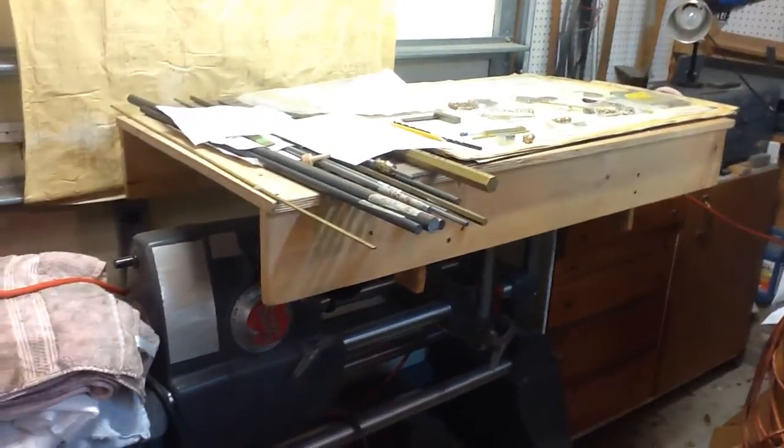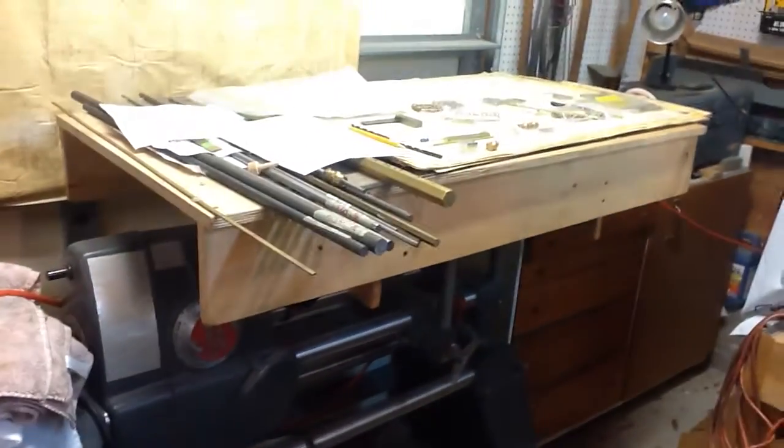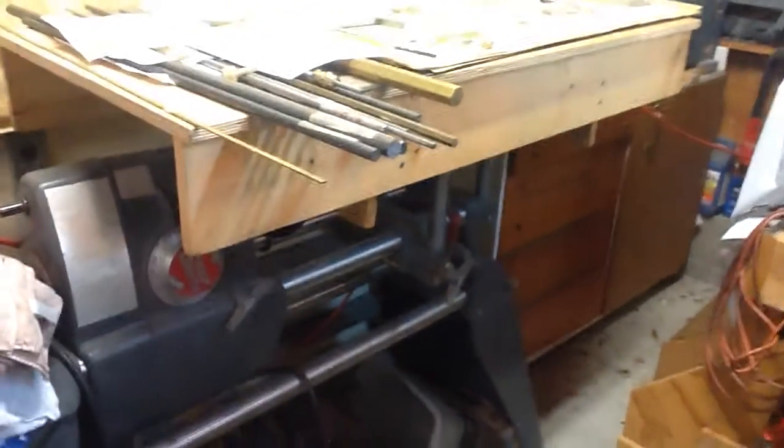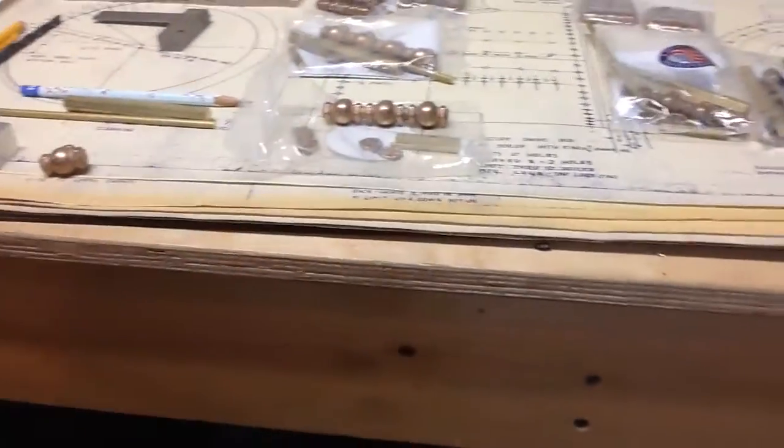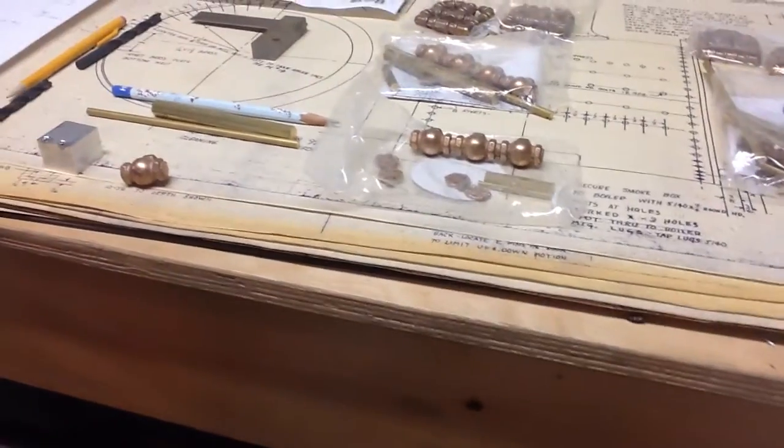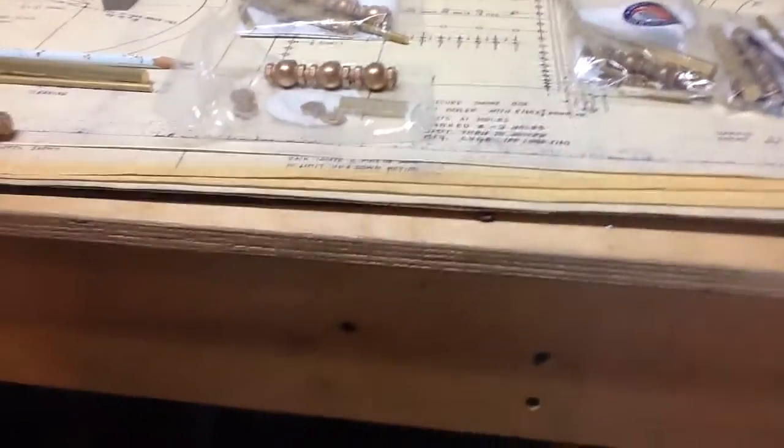I just took a 2 foot by 4 foot piece of nice plywood, put a couple of pieces of wood on the side that make a nice tight fit around the actual table of the shopsmith, so it makes a nice blueprint table.